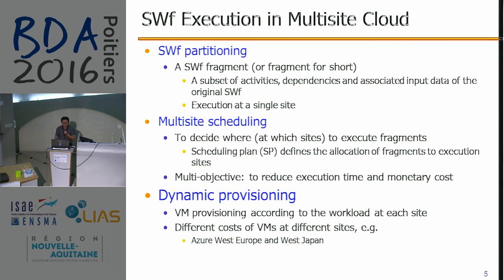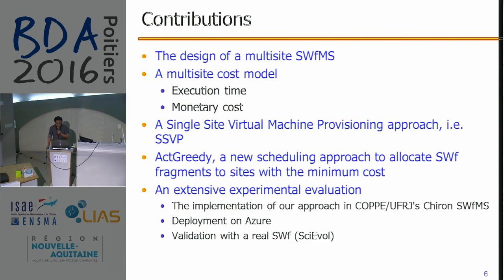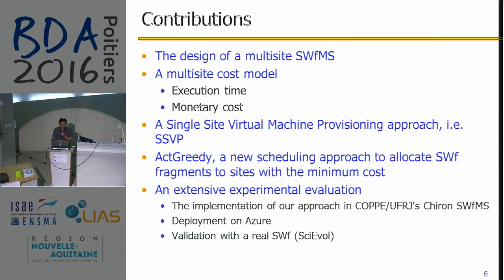For example, in Microsoft Azure, the cost to use a virtual machine of one CPU core for one minute is 4.5 cent euro at Azure West Europe, but it is 6 cent euro at West Japan. In this work, we have several contributions: the design of a multi-site scientific workflow management system, a multi-site cost model composed of execution time and monetary cost, a single-site virtual machine provisioning approach called SSVP, and a new scheduling approach to allocate scientific workflow fragments to different cloud sites with minimum cost, called extra-grading. Finally, we validate our approaches with intensive experimental evaluation.